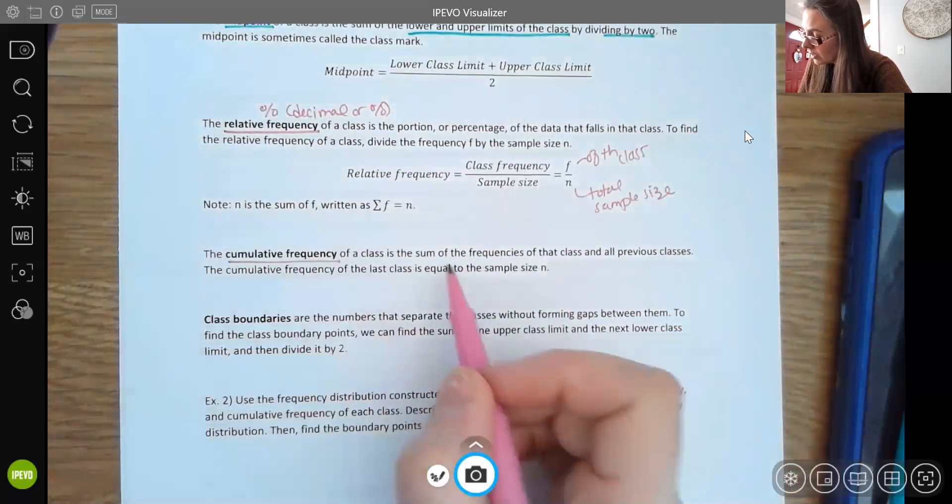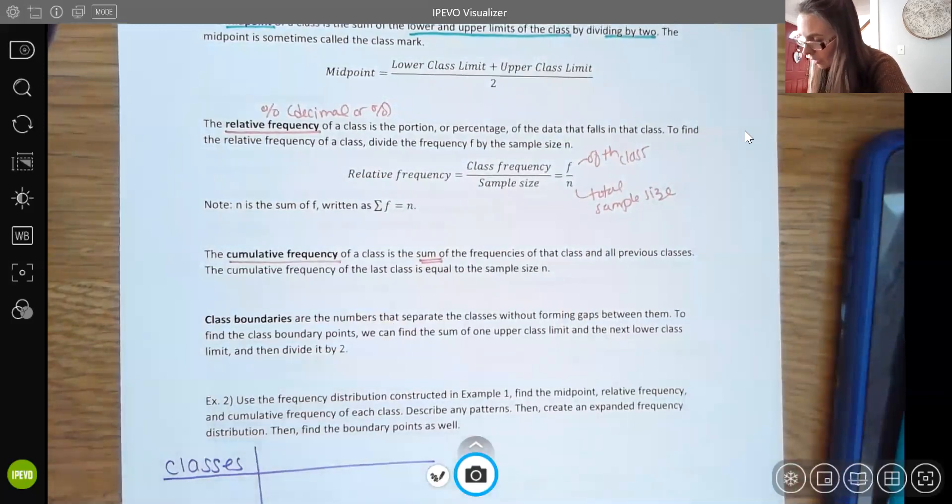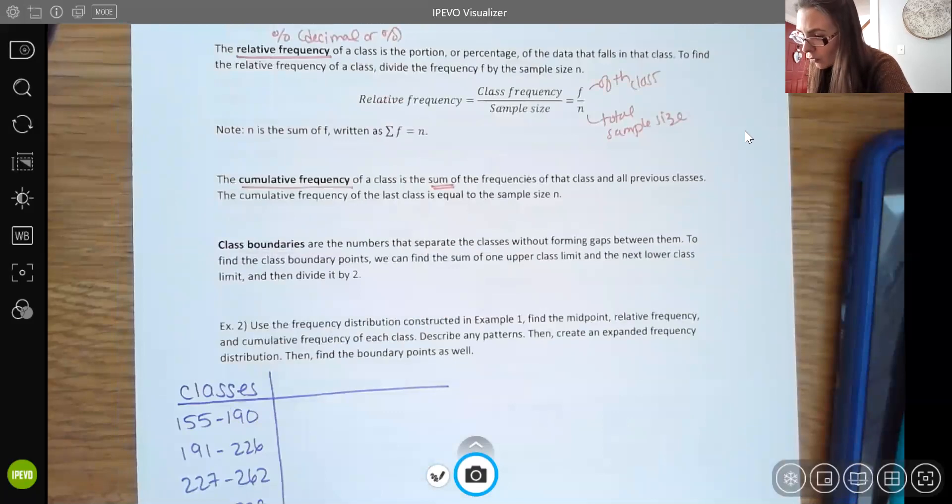And then our cumulative frequencies is actually a sum. We're adding that frequency each time. So let me pause for a second and show you what that looks like. I'm not going to rewrite the midpoints here because I have those on the other page. So this process is a little slow, but it's not overly difficult. It's just a lot of steps. So you want to just really try it out yourself and go through the motions.